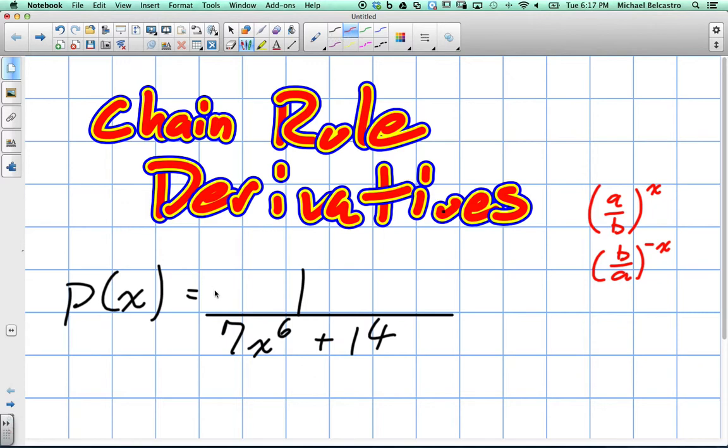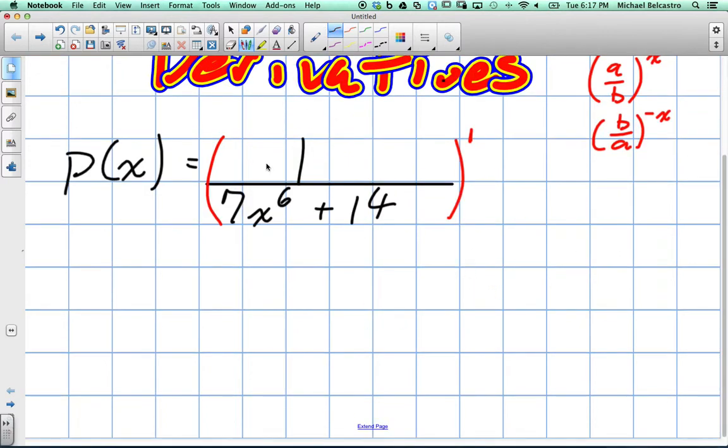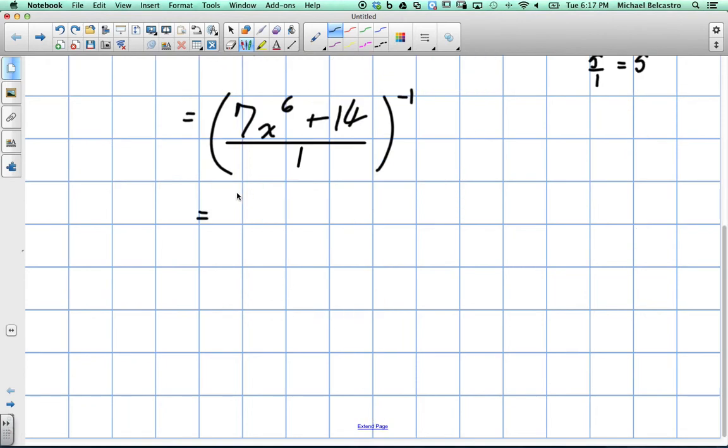Same idea here. Let's say this is to the power of 1, because I can say to the power of 1 and it doesn't change anything. I'm going to make it to the power of negative 1. So when I do that, I'm going to get 7x to the power of 6 plus 14 divided by 1, and all of that is to the power of negative 1 now. Well, anything divided by 1 is just 5 divided by 1 is just 5. So that fraction essentially disappears.